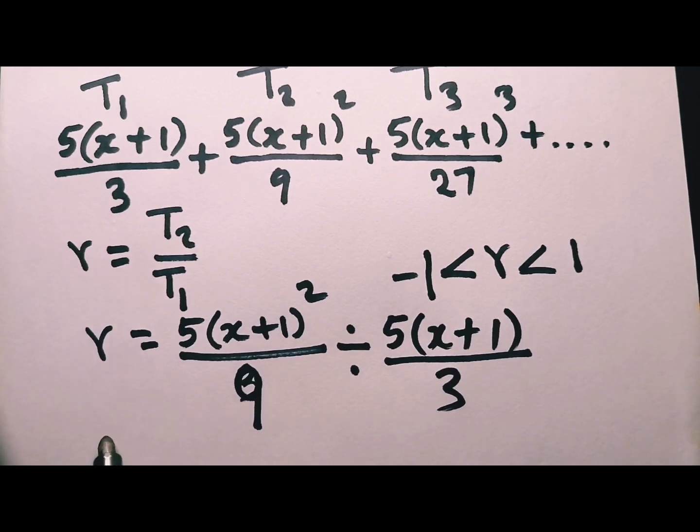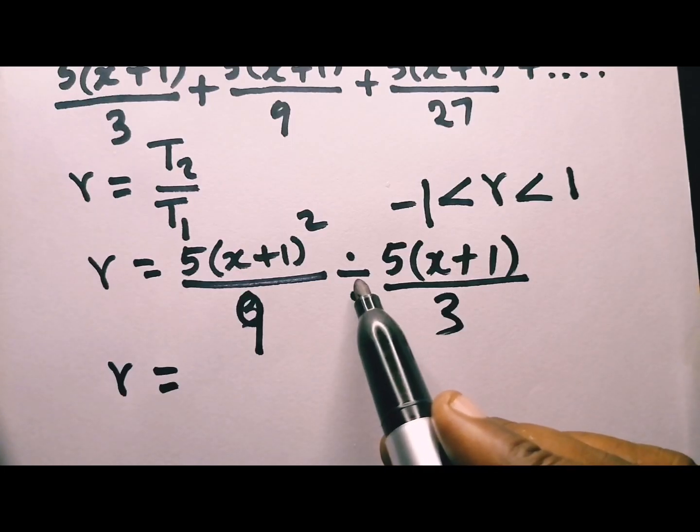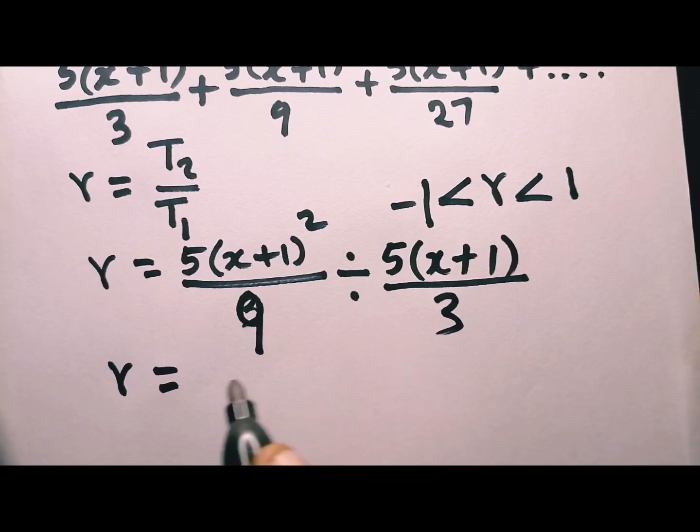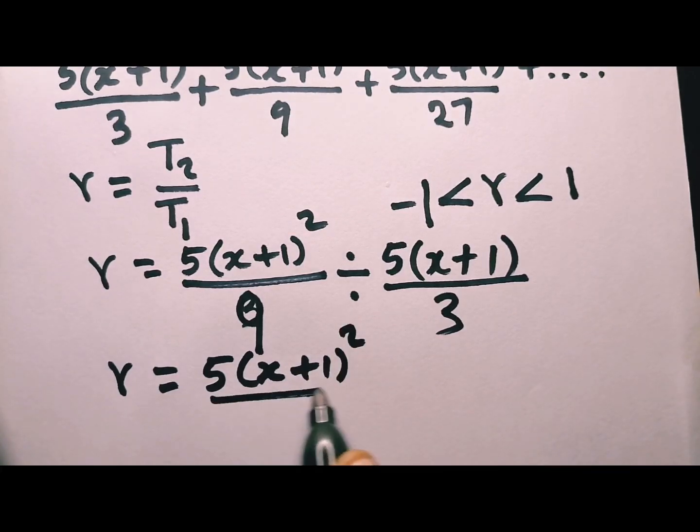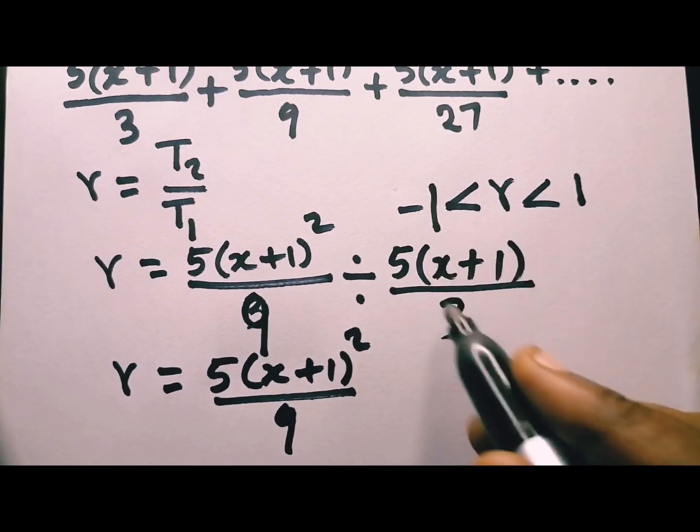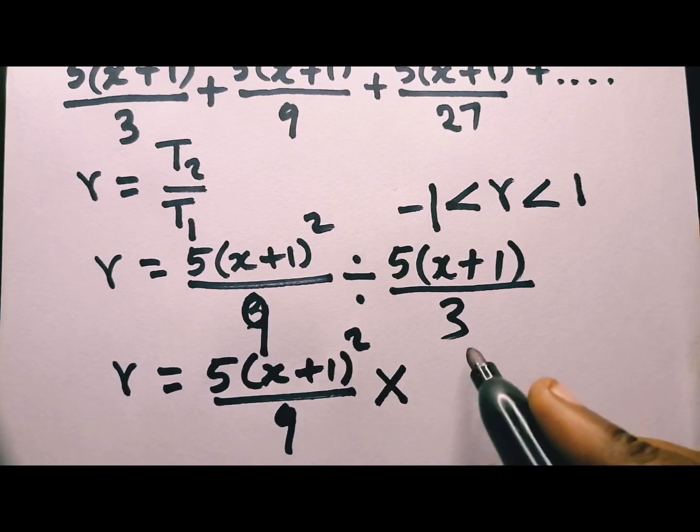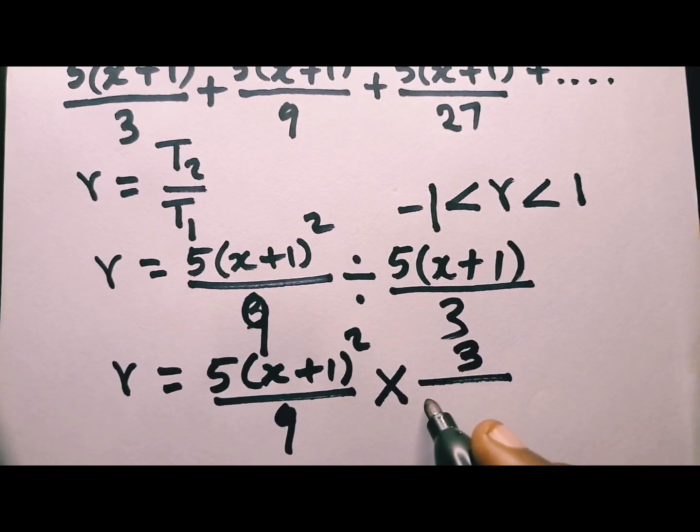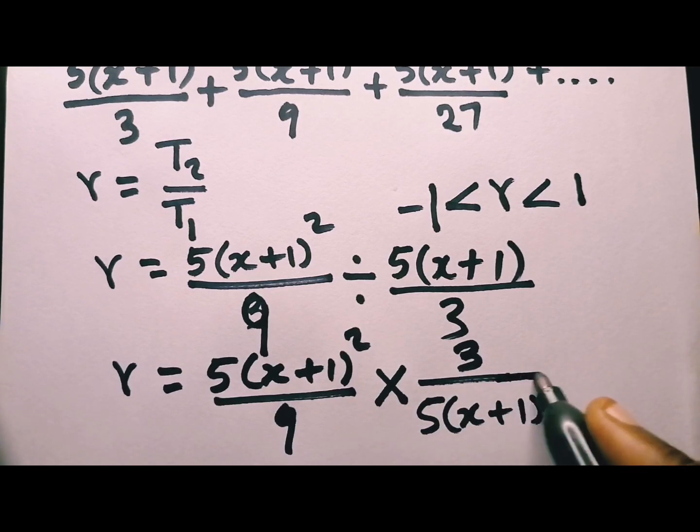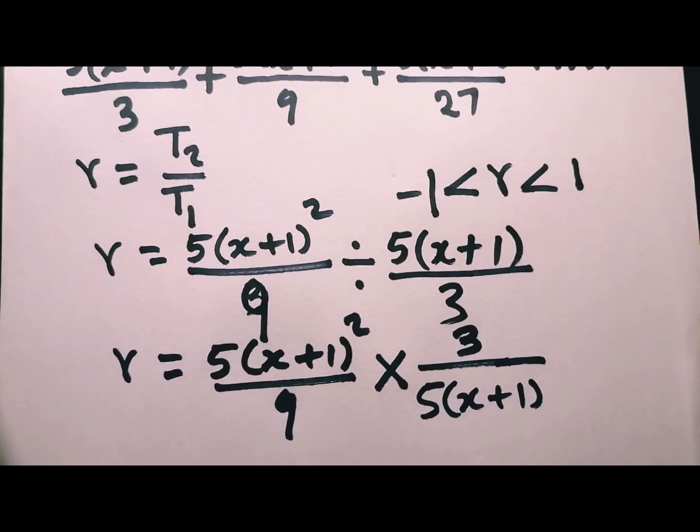In math, you can change this into multiplication sign. But after doing that, you can or you have to flip this fraction. So we have multiplication. Now, this 3 becomes numerator, and this is denominator now.